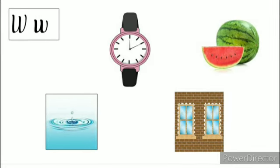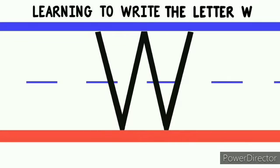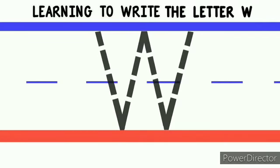Now let's see the writing pattern of letter W. Keep your pencil on the top. Write slant line and come down.